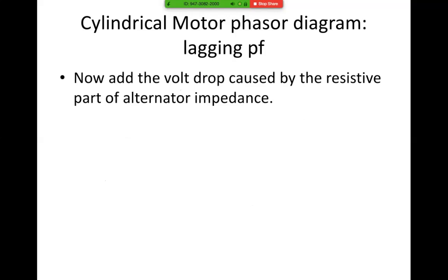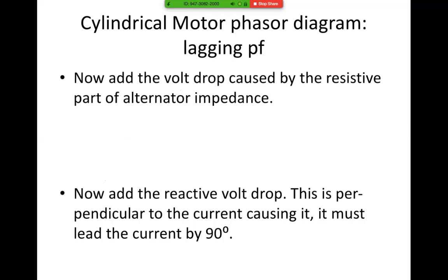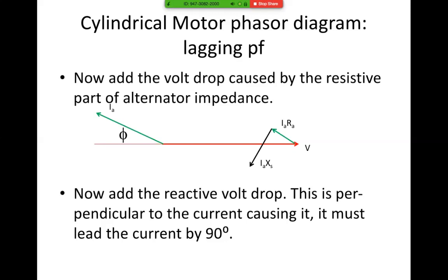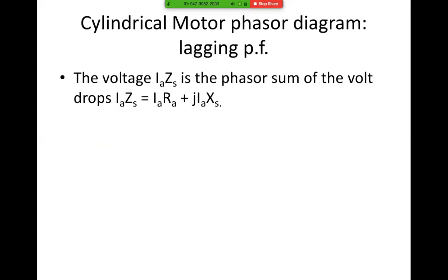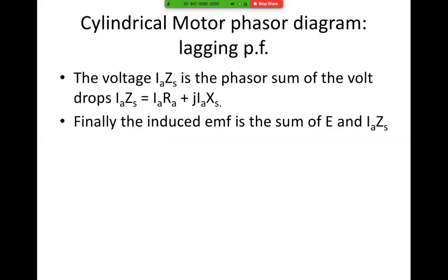Now add the voltage drop caused by the resistive part of the alternator. Add the reactive voltage drop — this is perpendicular to the current causing it and must lead the current by 90 degrees. There we have IaRa angle, and IaRa is always in phase with the current causing it. IaXs must lead the current because it is 90 degrees perpendicular to it. So the voltage drop IaZs is again the sum of IaRa plus j·IaXs. Finally, the induced EMF is the sum of V and IaZs.